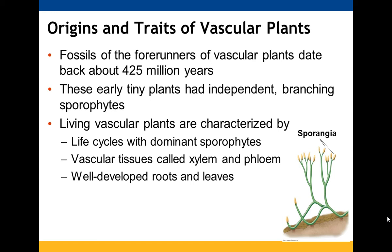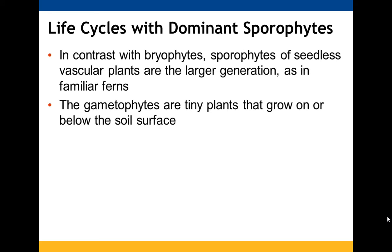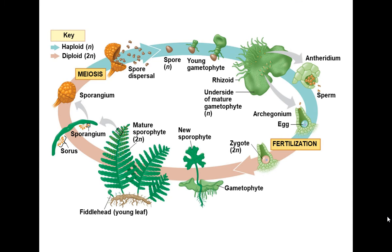These early tiny plants had small sporophytes that branched independently, so they're characterized by life cycles that focus on the sporophyte, having xylem and phloem, and well-developed roots and leaves — things we didn't talk about as much with bryophytes. The sporophytes of seedless vascular plants are the larger generation, which is the opposite of bryophytes. The gametophytes are tiny plants that grow on or below the soil surface.